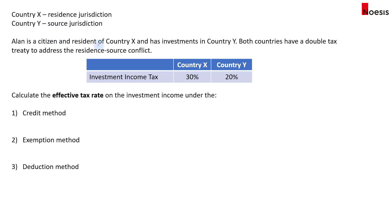Alan is a citizen and resident of country X, and Alan has investments in country Y. Country Y, as a source jurisdiction, will charge taxes on the investment income earned by Alan in their country. Country X, where Alan is a resident, will also try to claim taxes on that investment income. Both countries will have a double tax treaty to address this resident-source conflict. Country X applies a 30% tax rate and country Y applies a 20% tax rate on investment income.